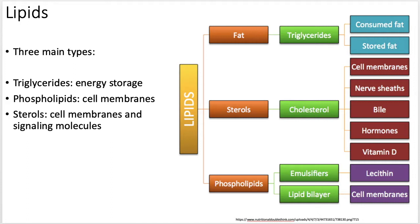We're going to talk about phospholipids for cell membranes — just that general structure. There's a ton of variety in there. And then we'll talk about sterols, which are like your cholesterols or ergosterols. Those are in cell membranes, but they're also part of signaling molecules. It's going to get a little complicated because a lot of these things are tied to each other, and there are a lot of pathways that cross over. I'll try and keep things pretty clear.